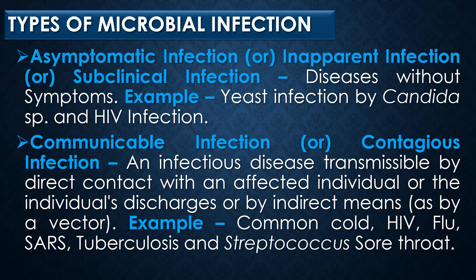Communicable infection is also called contagious infection. An infectious disease transmissible from one person to another by direct contact with an affected individual or their discharges, or by indirect means such as vectors, is referred to as communicable or contagious infection. Examples include common cold, HIV, flu, SARS, tuberculosis, and streptococcal sore throat.